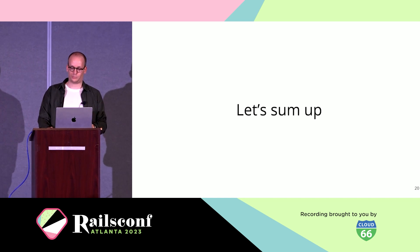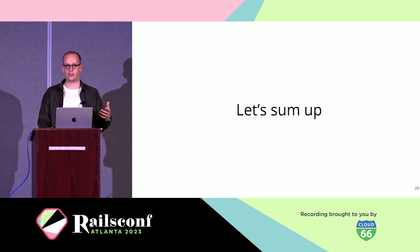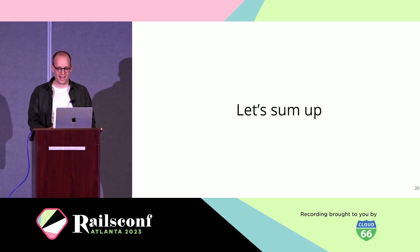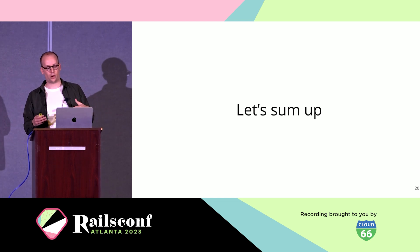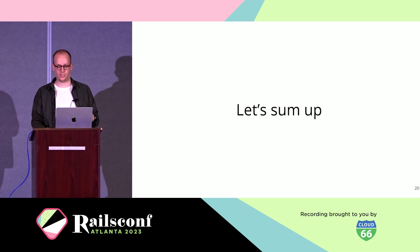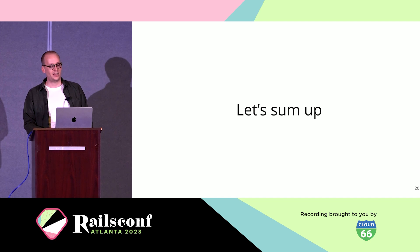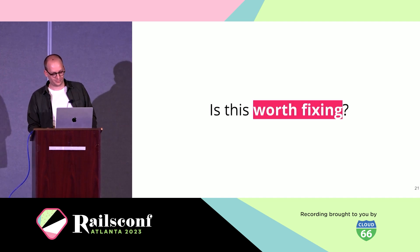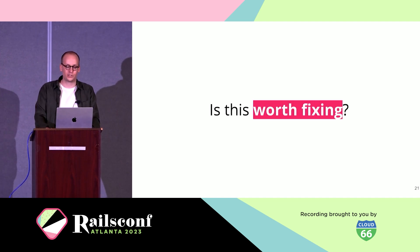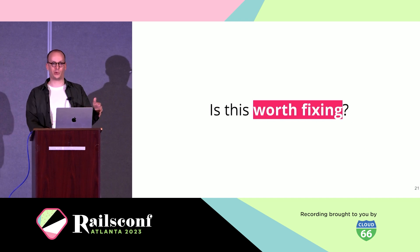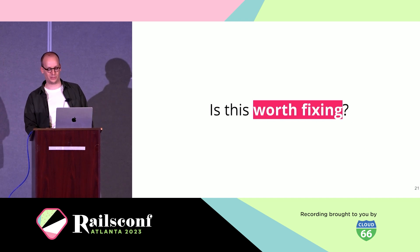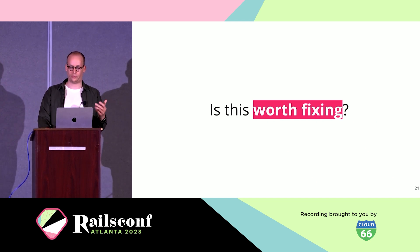So let's sum up. We got the ticket raising the question: is there a memory leak in one of our Ruby jobs? At this point we are quite convinced there is. We lowered the concurrency, split the workers, and increased their capacity with no satisfactory result. So now, is this worth fixing? It's a talk about pragmatism, so let's be pragmatic.